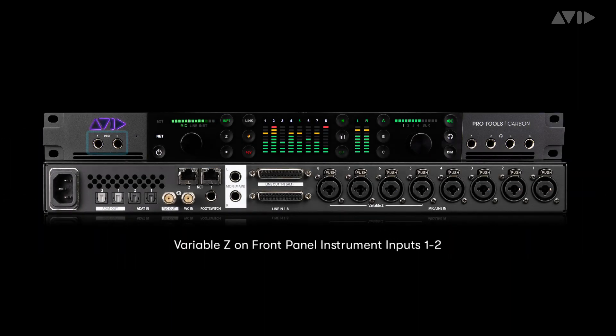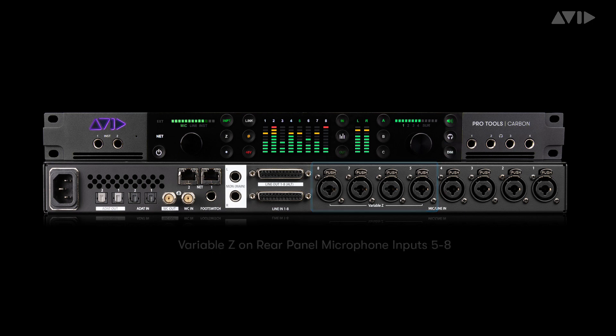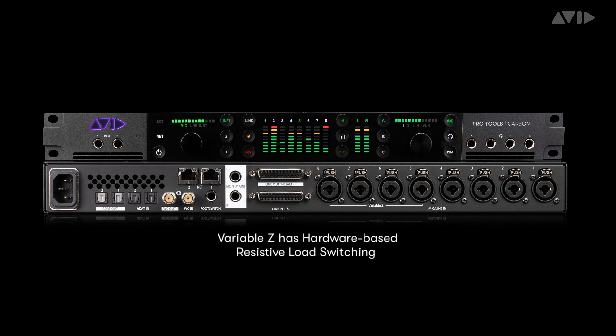Variable Z lets you change the impedance of the instrument inputs on the front panel or mic inputs 5 to 8 on the rear panel, depending on what your input or processing needs are. This is achieved with switchable resistive loads on these physical inputs.